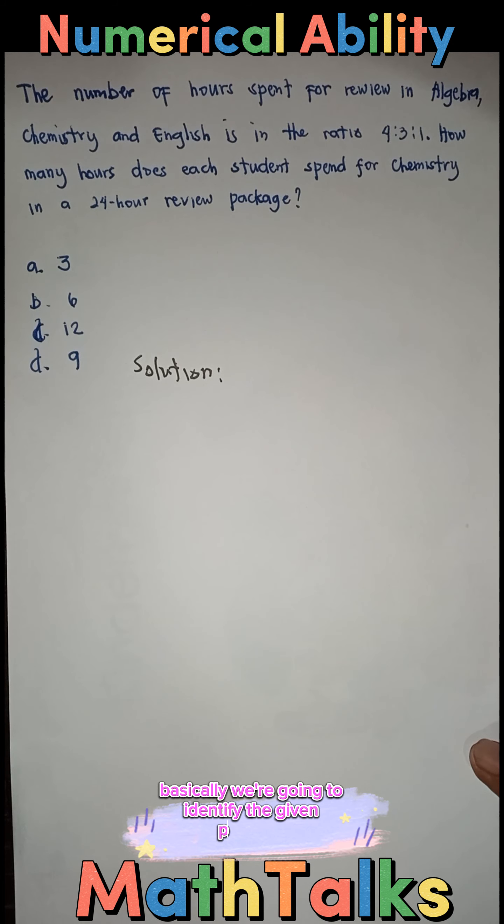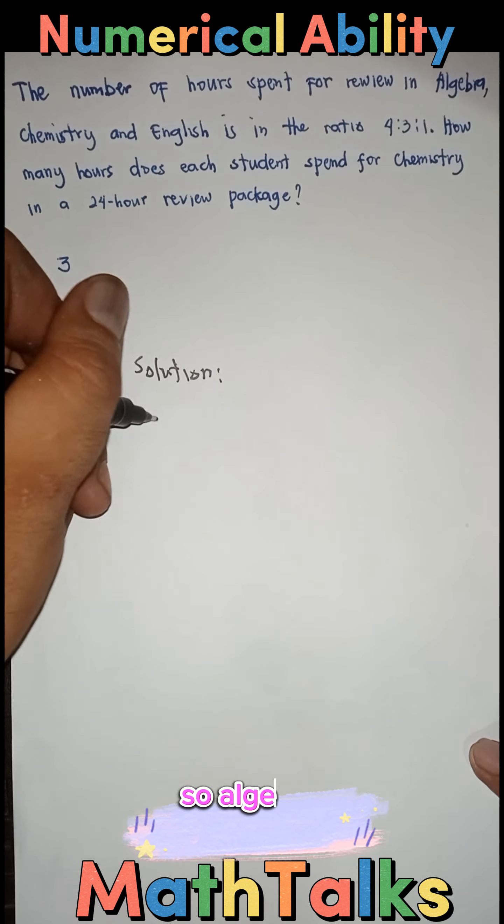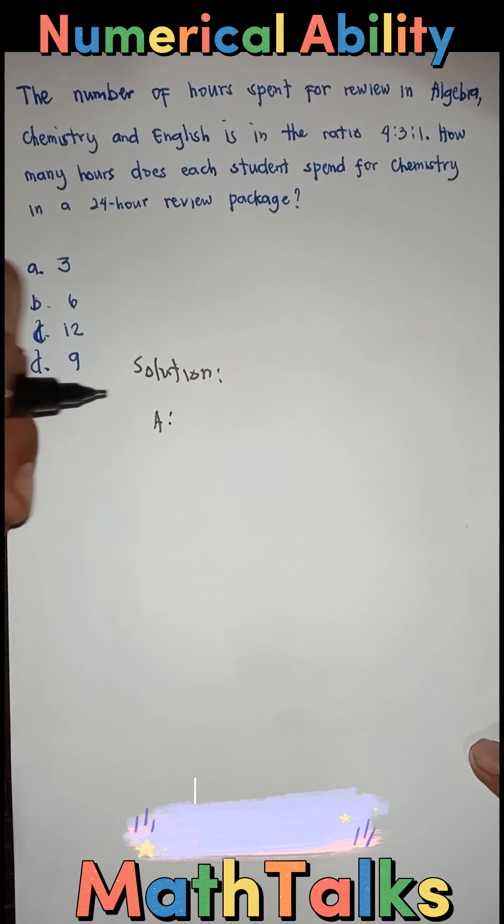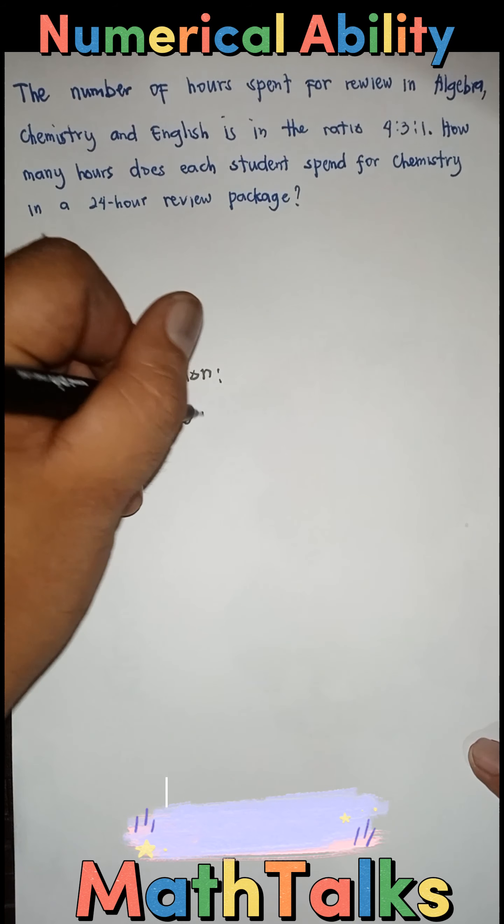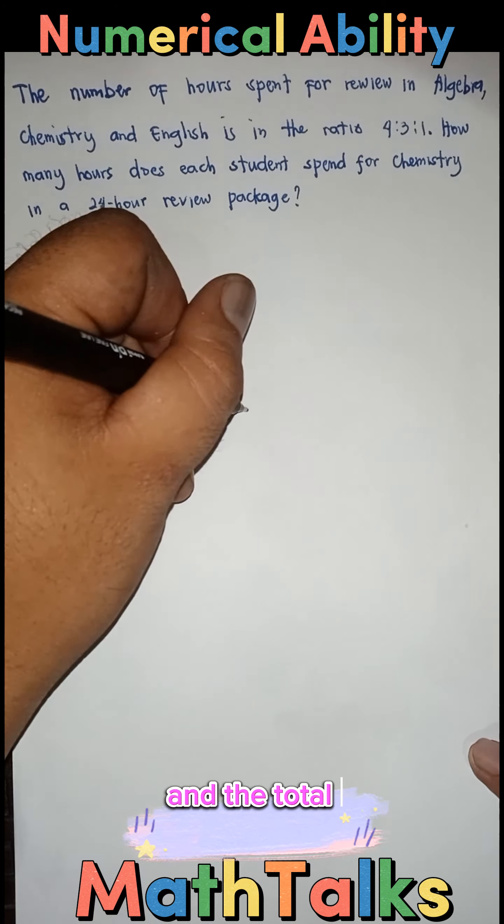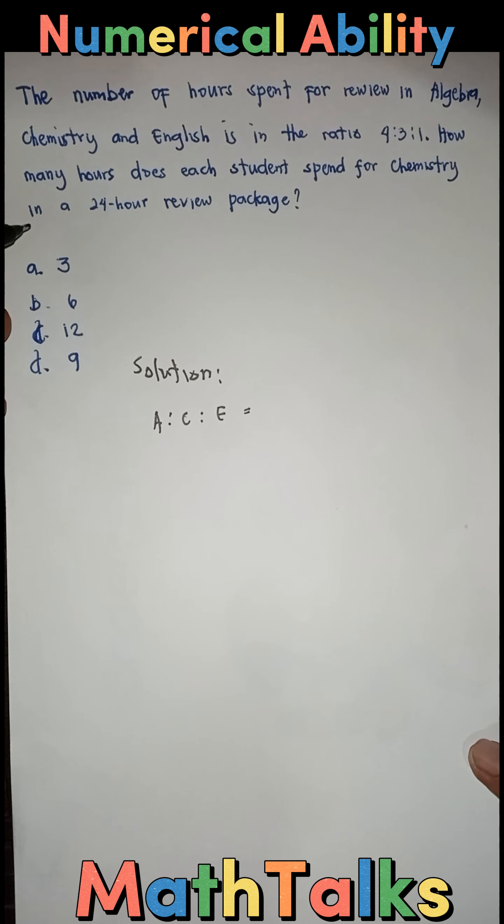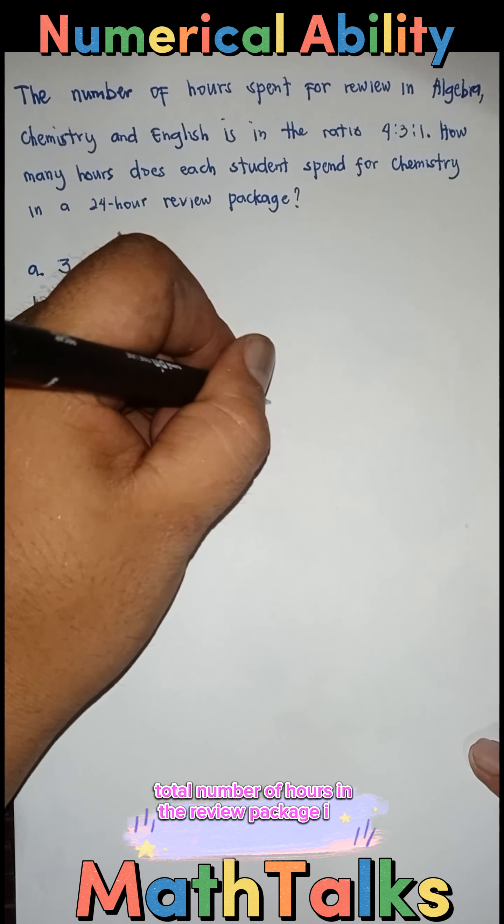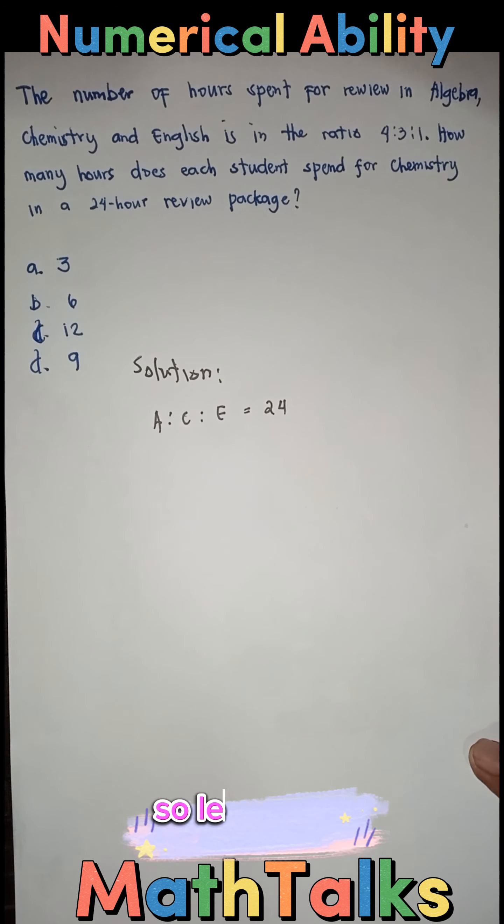we are going to identify the given positions. So, Algebra stands for A, then C for Chemistry, and English is E. And the total number of hours in the review package is 24. So, let's key in.